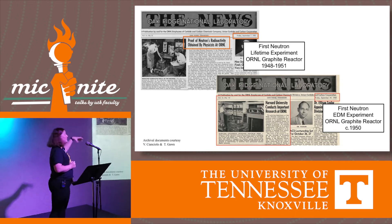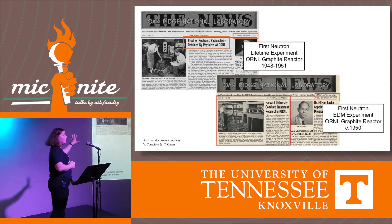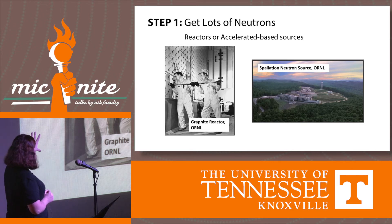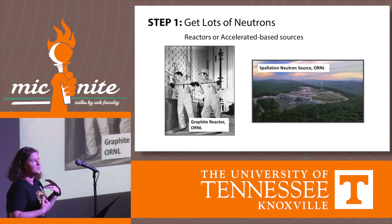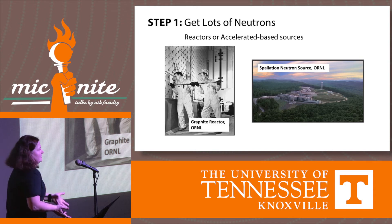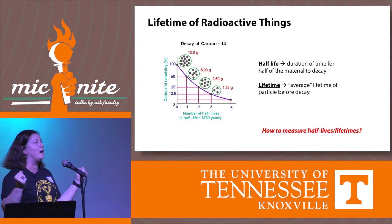The first source of a large number of neutrons was the graphite reactor right up the road, at what was then called Clinton Labs. The very first experiment measuring the lifetime of the free neutron was done right here in eastern Tennessee. There are two main ways to get lots of neutrons: a nuclear reactor, like was used in the 1940s, or a more modern accelerator-based spallation neutron source, also in eastern Tennessee. In both cases, you don't make the neutrons — you free them from something that already has a lot, like uranium.